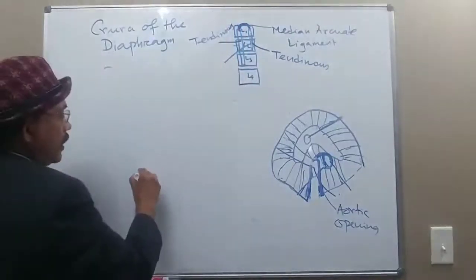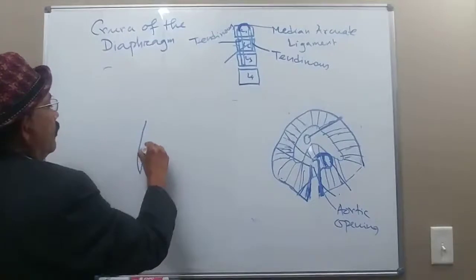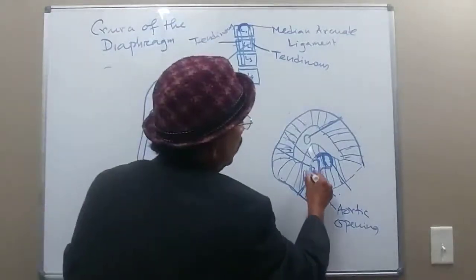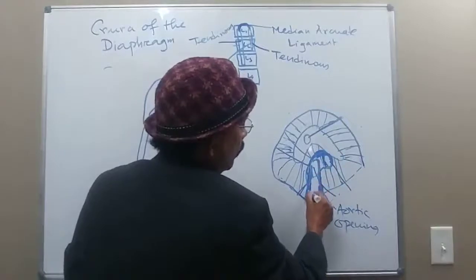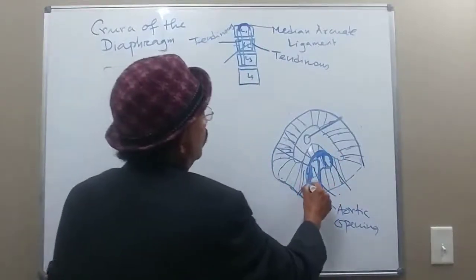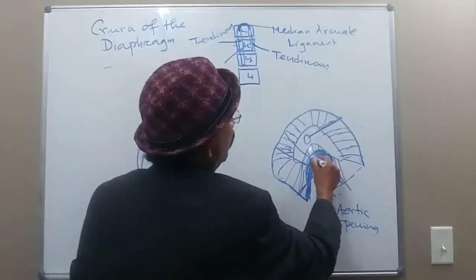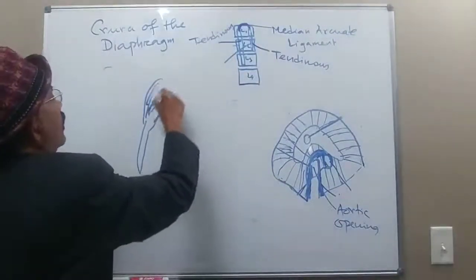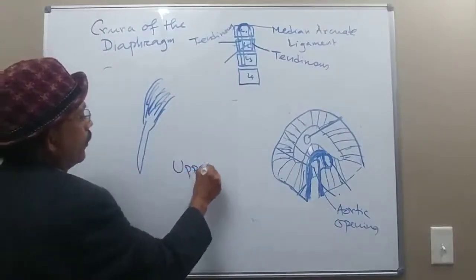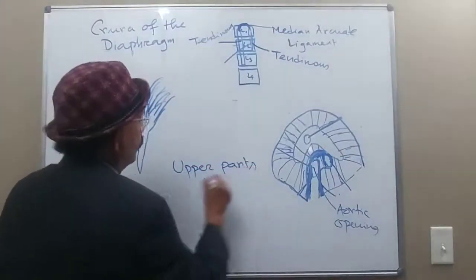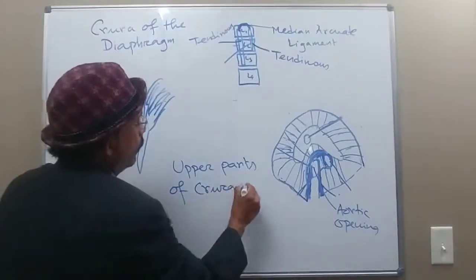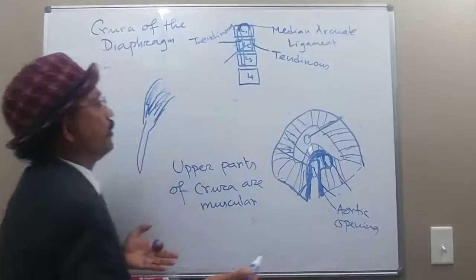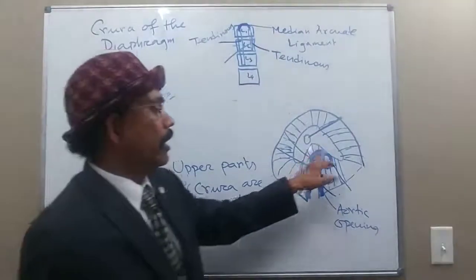The crura are tendinous at their origin from the lumbar vertebrae, but above that they are muscular. The upper part of the crura is muscular, and this muscle inserts into the central tendon of the diaphragm.